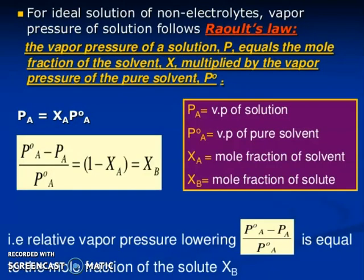For ideal solution of non-electrolytes, Vapor Pressure of solution follows Raoult's law. What is Raoult's law? The Vapor Pressure of a solution, we are talking about the pressure, equals the mole fraction of the solvent, X, multiplied by the Vapor Pressure of the pure solvent, P°. When 0 is there, that is the pure. So PA equals XA P°A.